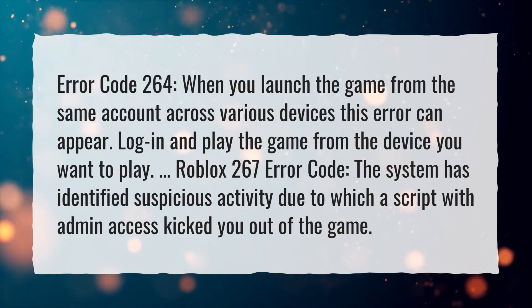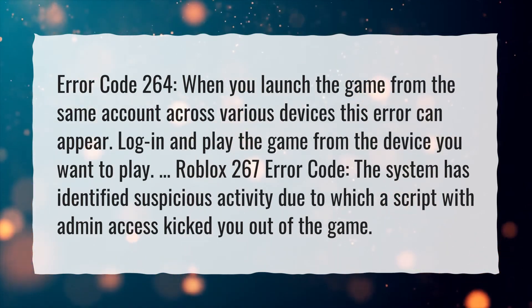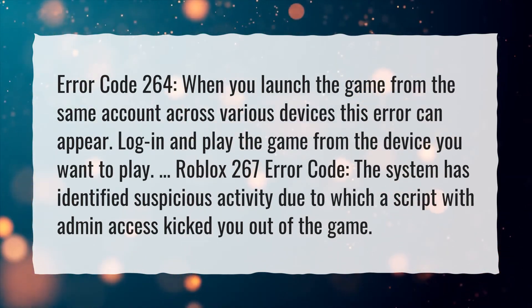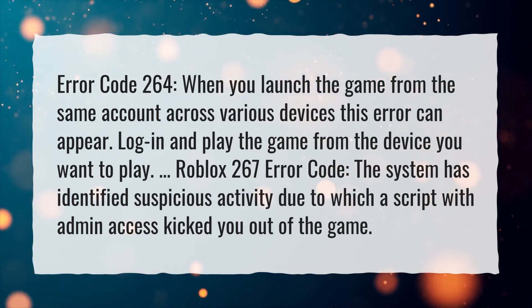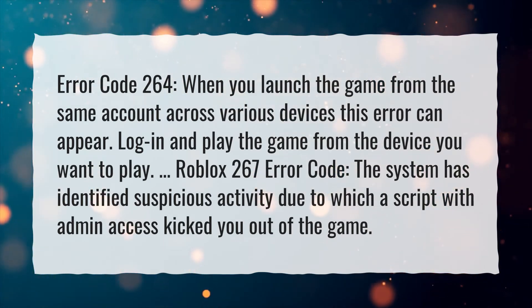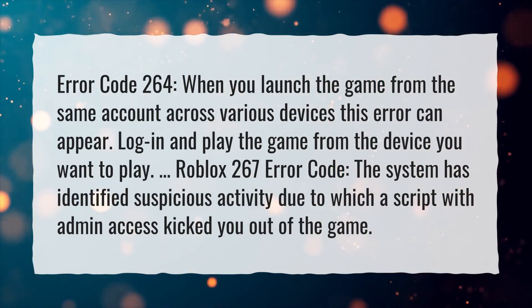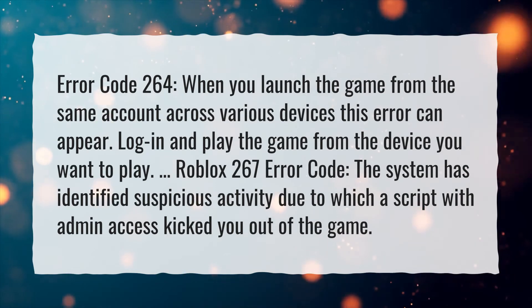Roblox error code 267: The system has identified suspicious activity, due to which a script with admin access kicked you out of the game.